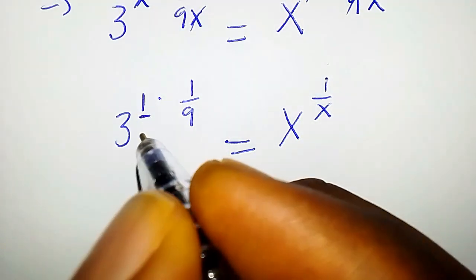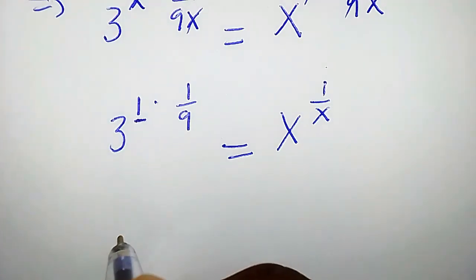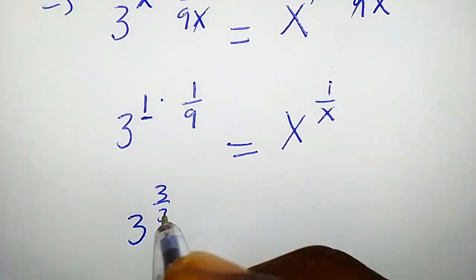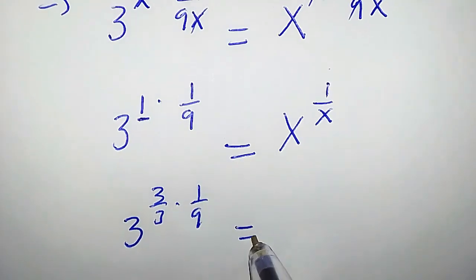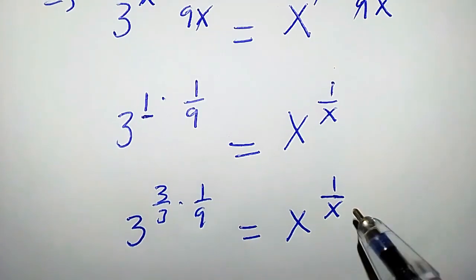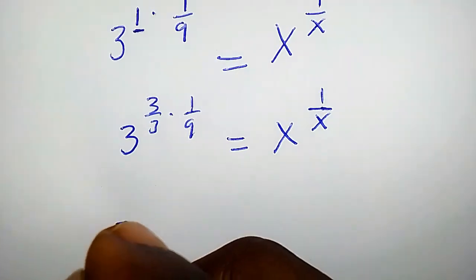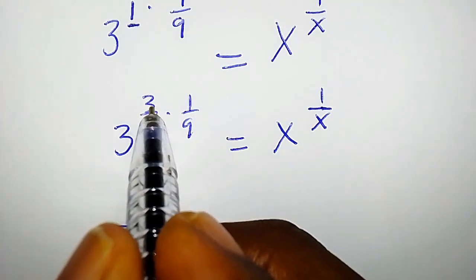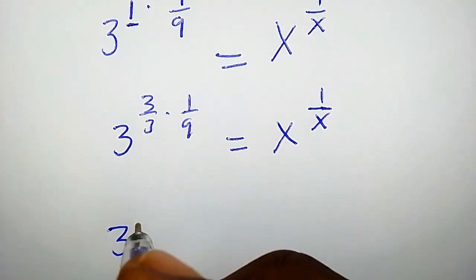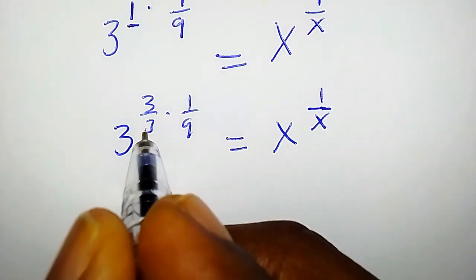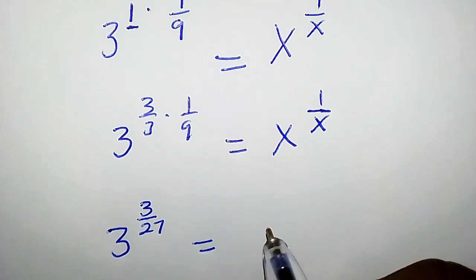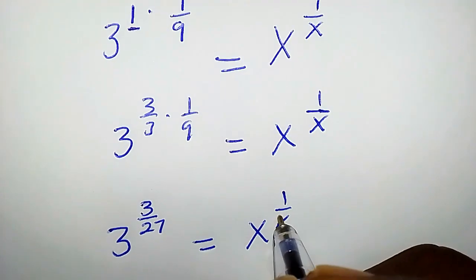We can rewrite this as 3 over 3. So we are going to have 3 raised to the power of 3 over 3 times 1 over 9 equals to x to the power of 1 over x. Multiplying the denominator, we have 3 times 9 that is 27, so 3 raised to the power of 3 over 27 equals to x to the power of 1 over x.